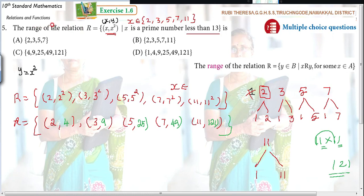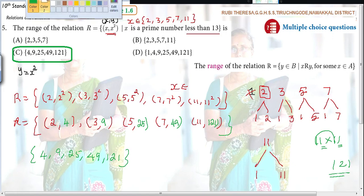What are they asking? Range. Range is what? Y is an element of B. That means the second element. What is the answer then? 4, 9, 25, 49, 121. So what is the answer? Many students, what you are making mistake is you are taking this. First you should know the basic concept. Because 1 is neither prime nor composite. 1 is divisible by 1 alone.